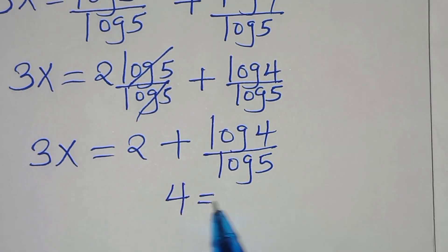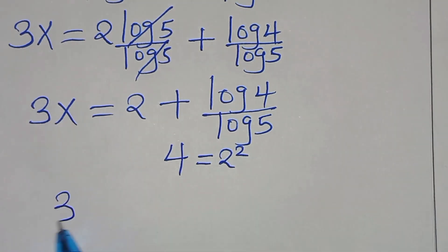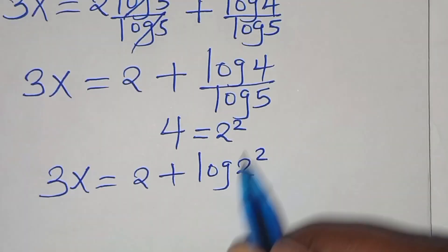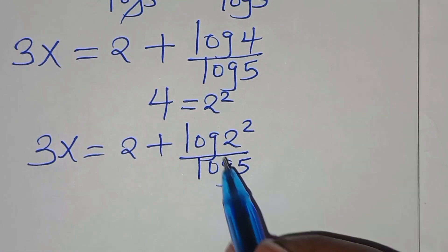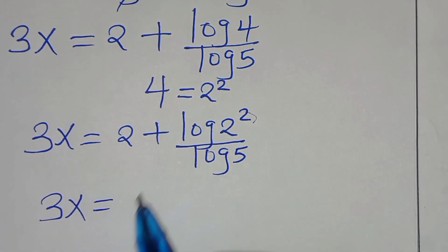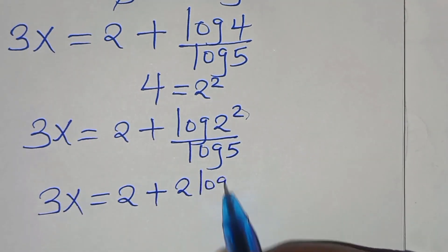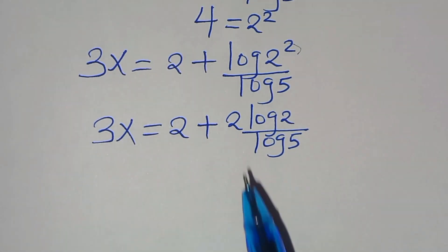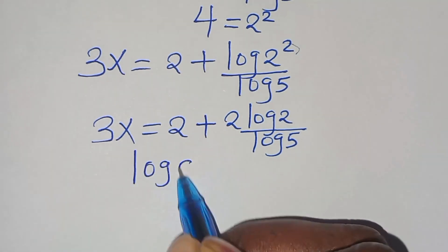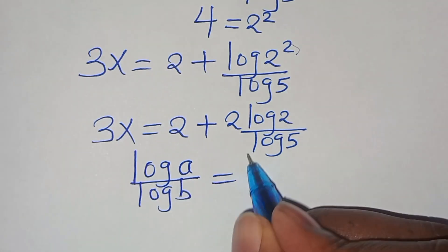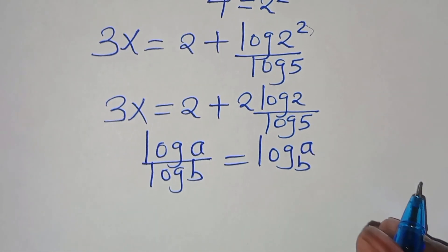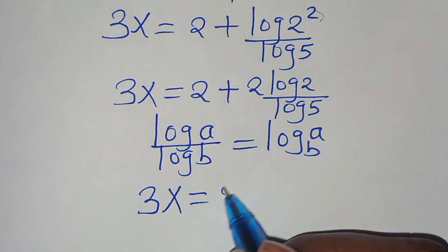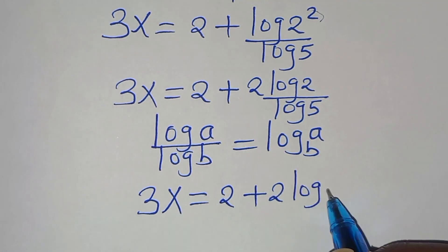Again we can express 4 as 2 to the power of 2. So therefore, we have 3x equals 2 plus log(2²) divided by log 5. Now log(2²)/log 5 is in the form of log A over log B, which can be expressed as log A to base B. Applying this, we have 3x equals 2 plus 2·log₅2.